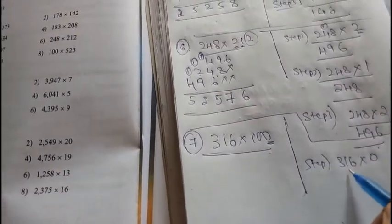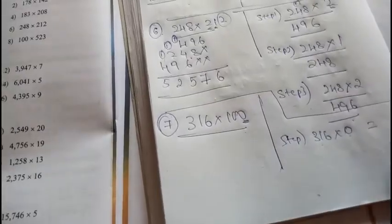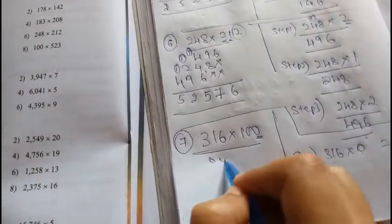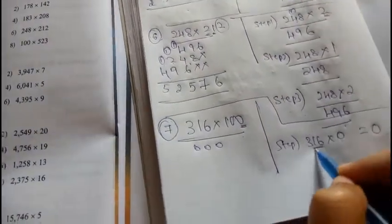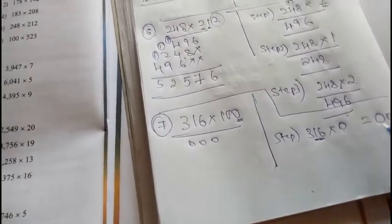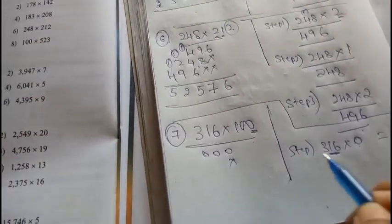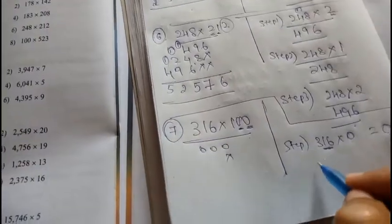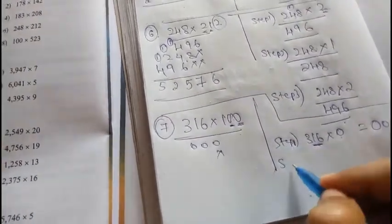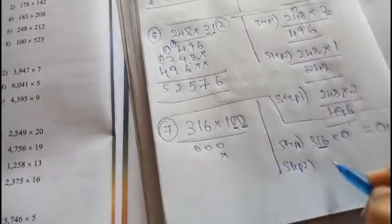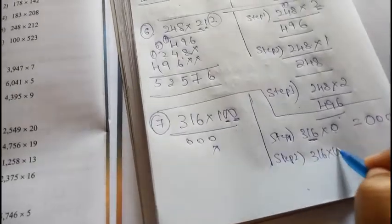In step 1: 316 into this 0. Anything multiplied by 0 is 0, so write three zeros. We have three numbers, so we'll get three zeros as the answer. Write three zeros and put an into mark over here.